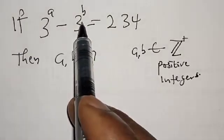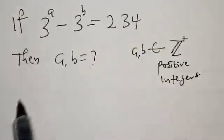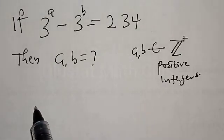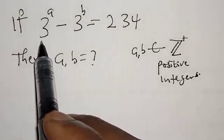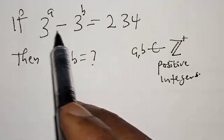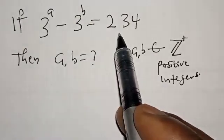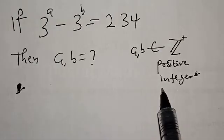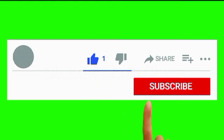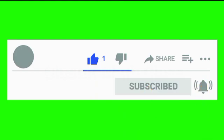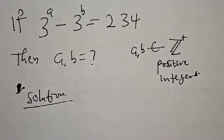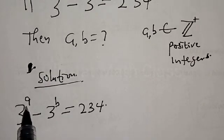If 3 raised to power a minus 3 raised to power b is equal to 234, then what is the value of a and b? Hi everyone, welcome to my class. In this class we want to look at how we can find the value of a and b from this given equation, 3 raised to power a minus 3 raised to power b is equal to 234, where a and b are positive integers.